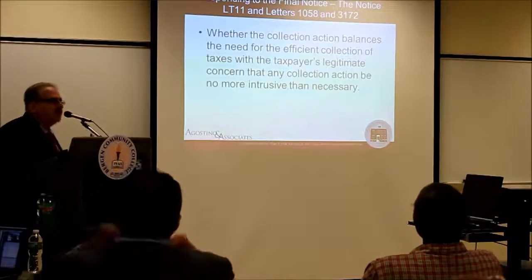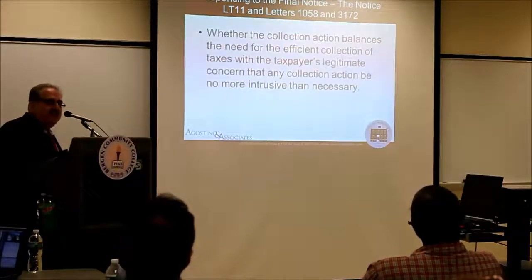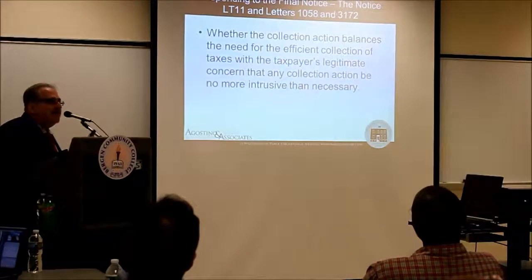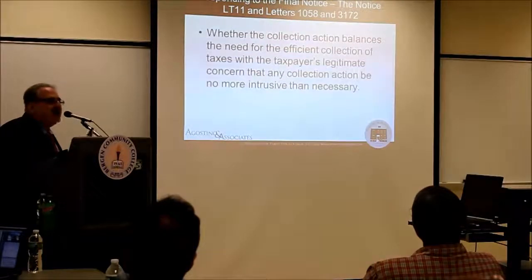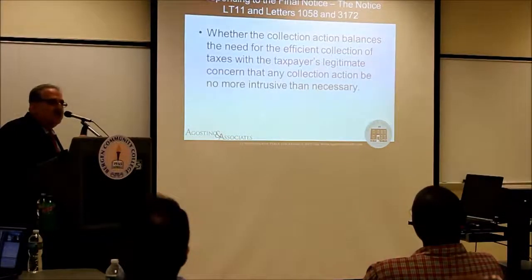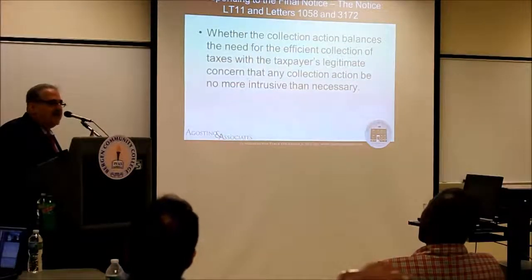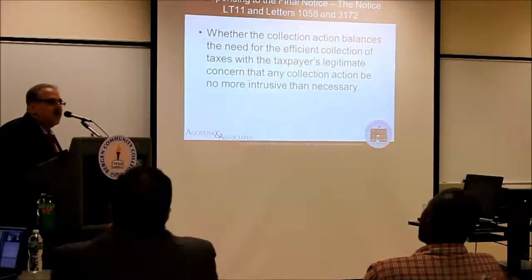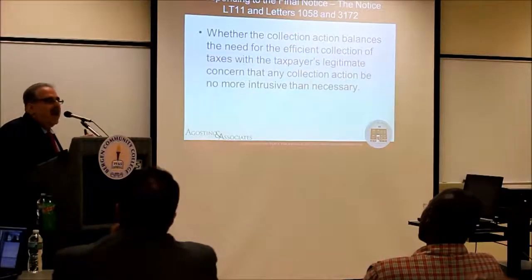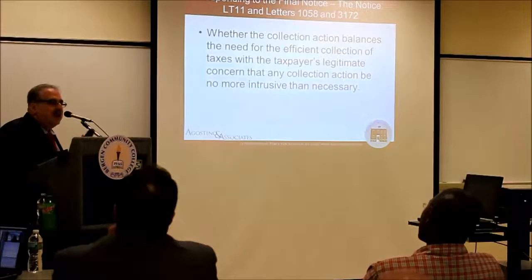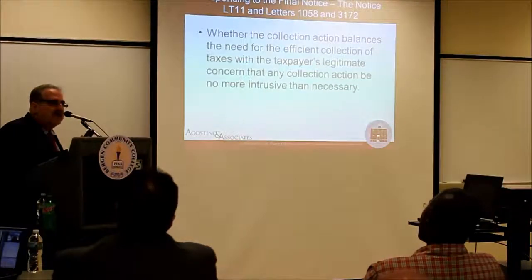There's something called the six-year rule. If you can pay the liability within six years, that's an acceptable collection alternative. You can propose a payment plan that fully pays the tax within six years — that's a good collection alternative. It's in the IRM and on the IRS website and is called the six-year rule. Rather than sell an asset and create a new liability, if you can propose a plan to pay it out over six years.